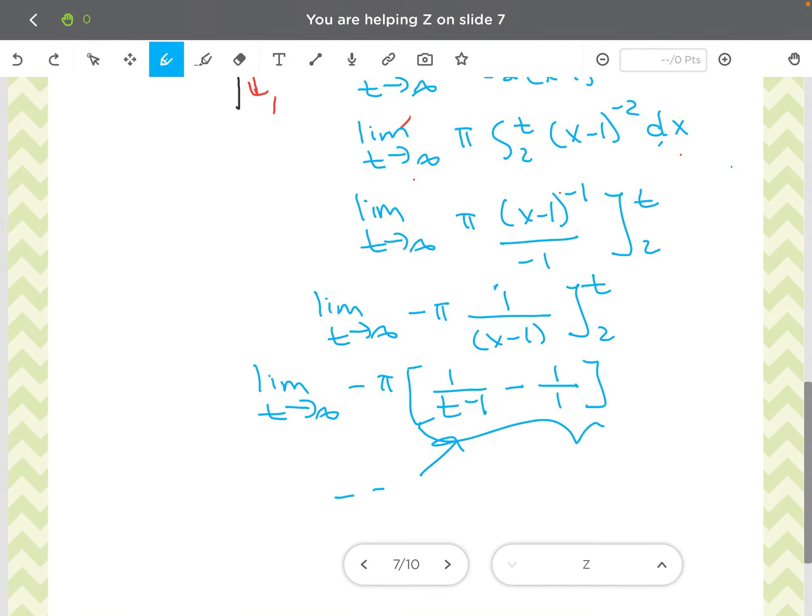Okay, this piece here, the negative pi is just a number. Remember, when I plug in infinity on the bottom, infinity minus 1 is still infinity. So 1 divided by infinity means this fraction right here is approaching 0. The bottom of the fraction gets bigger and bigger, so the whole fraction gets smaller and smaller. And then, so this volume is actually going to give me pi.